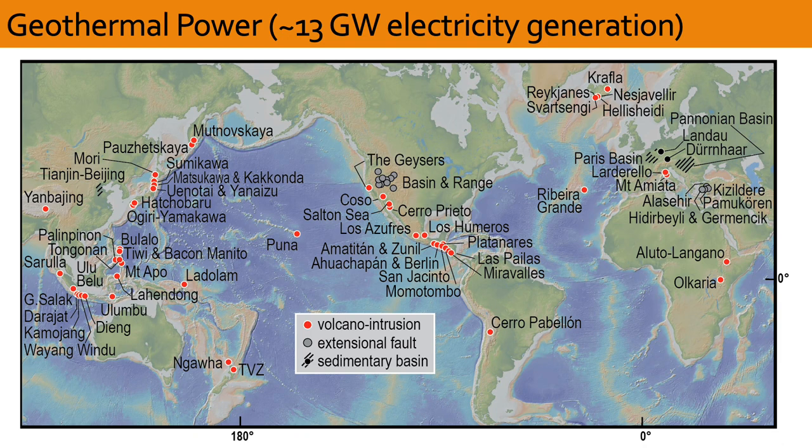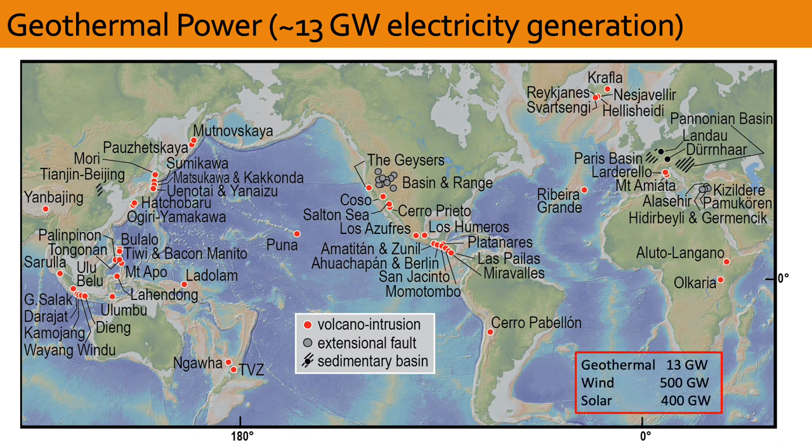Currently, conventional geothermal power generation occurs all over the world, but it only amounts to about 13 gigawatts, which is small compared to wind at 500 gigawatts and solar at 400 gigawatts. Furthermore, the geothermal resources on the map are all restricted in location by geological circumstances where subsurface temperature gradients are highly elevated by hydrothermal activity. One of the goals of EGS is to overcome such restrictions by enlarging the number of places where geothermal energy can be developed.